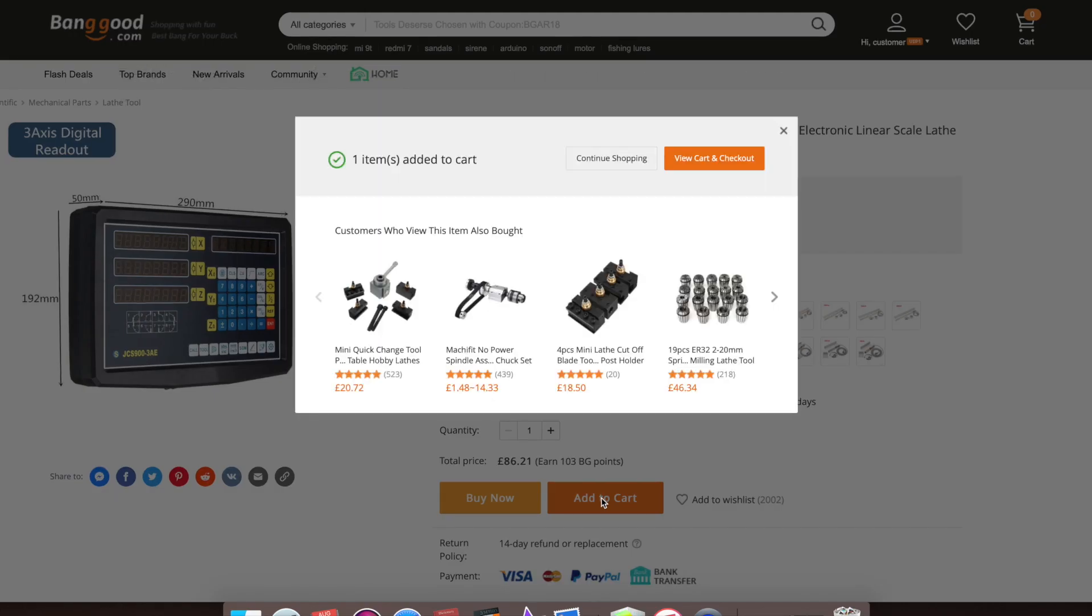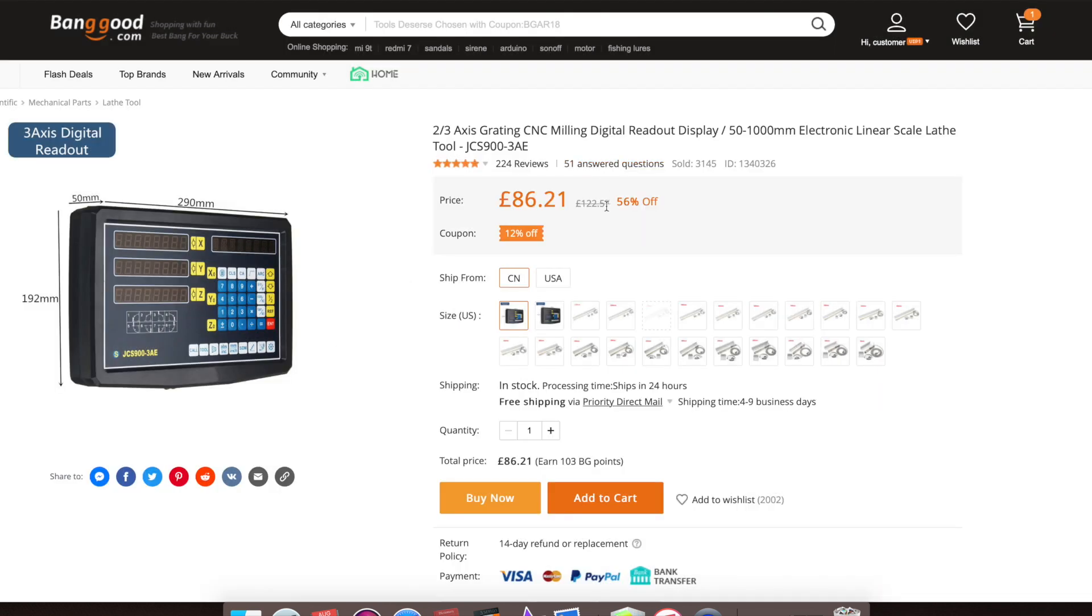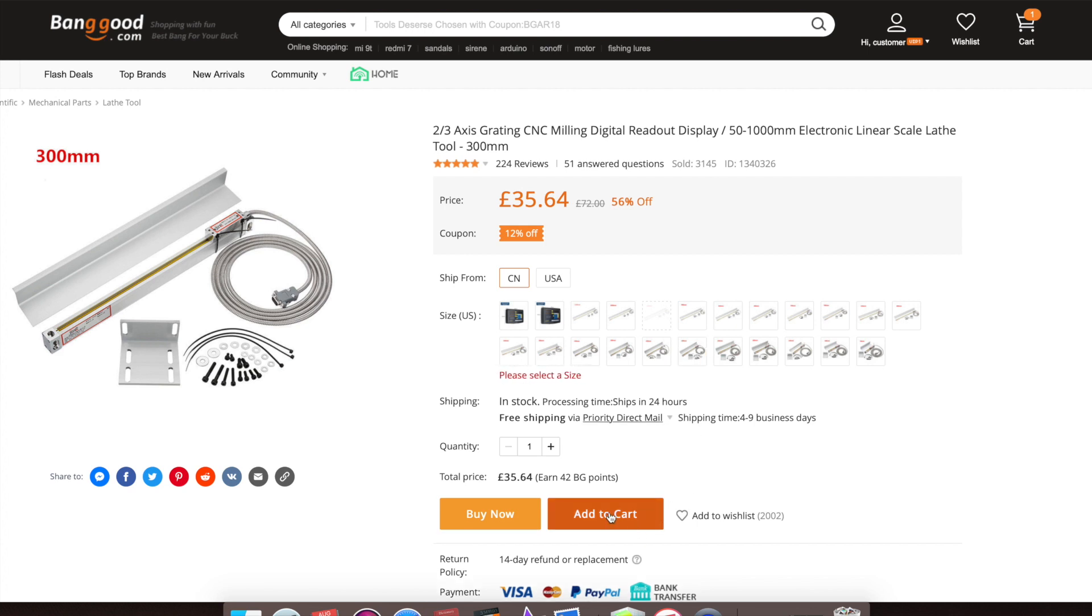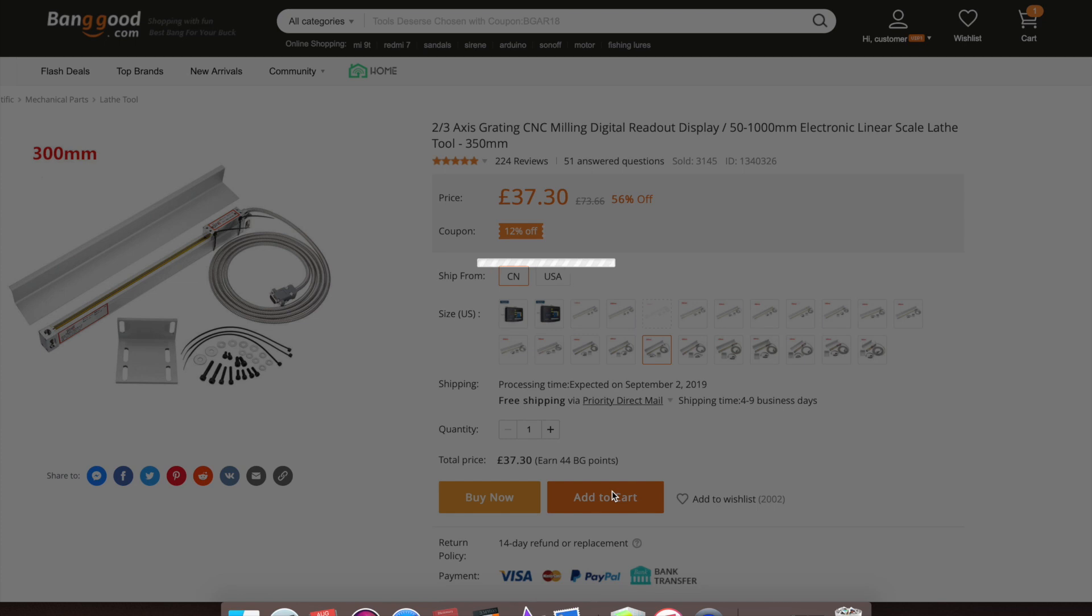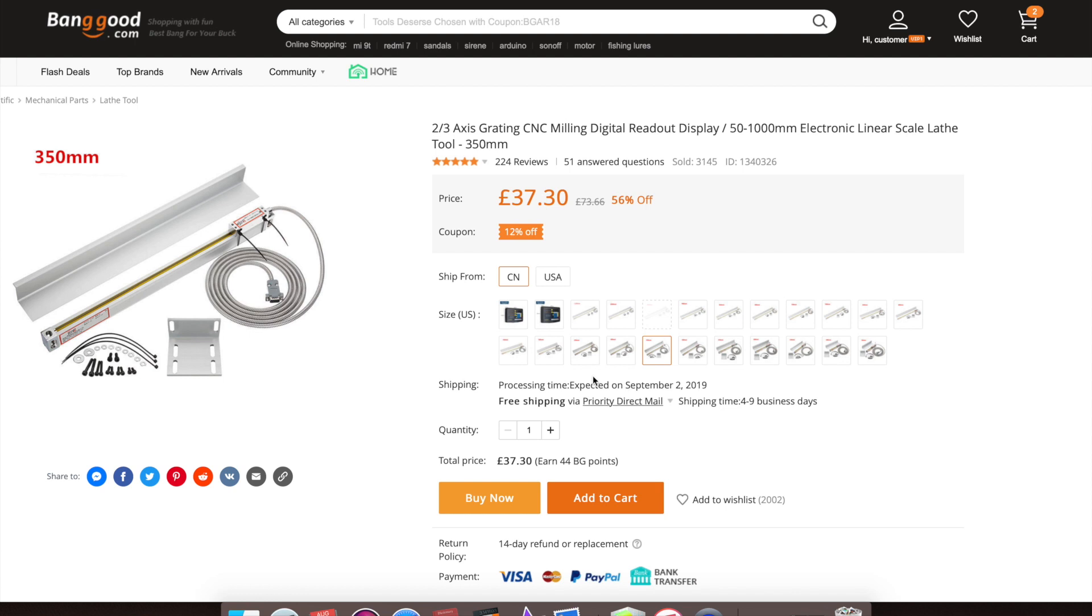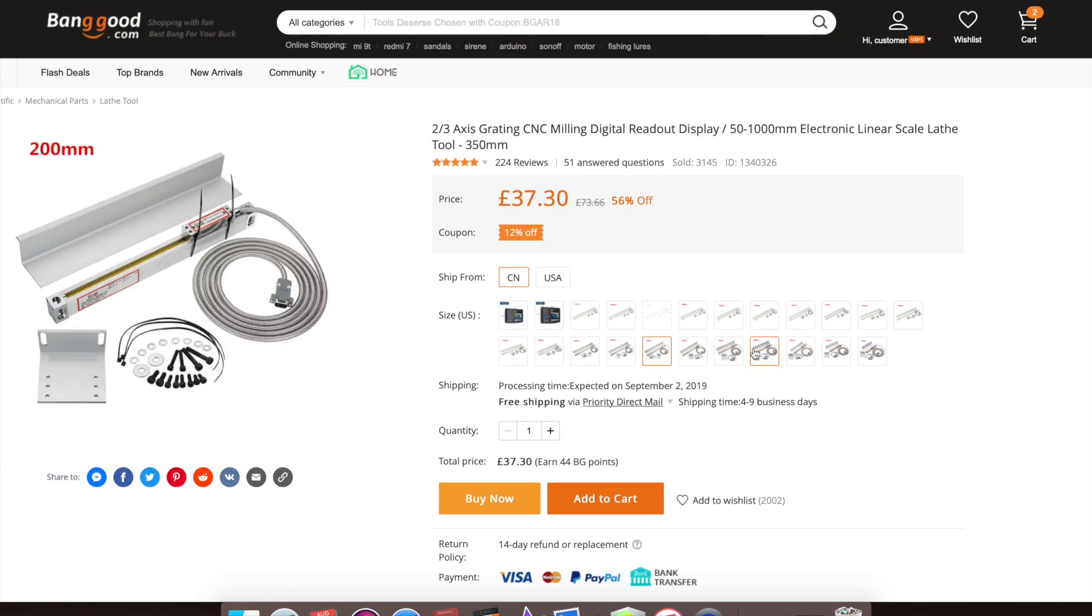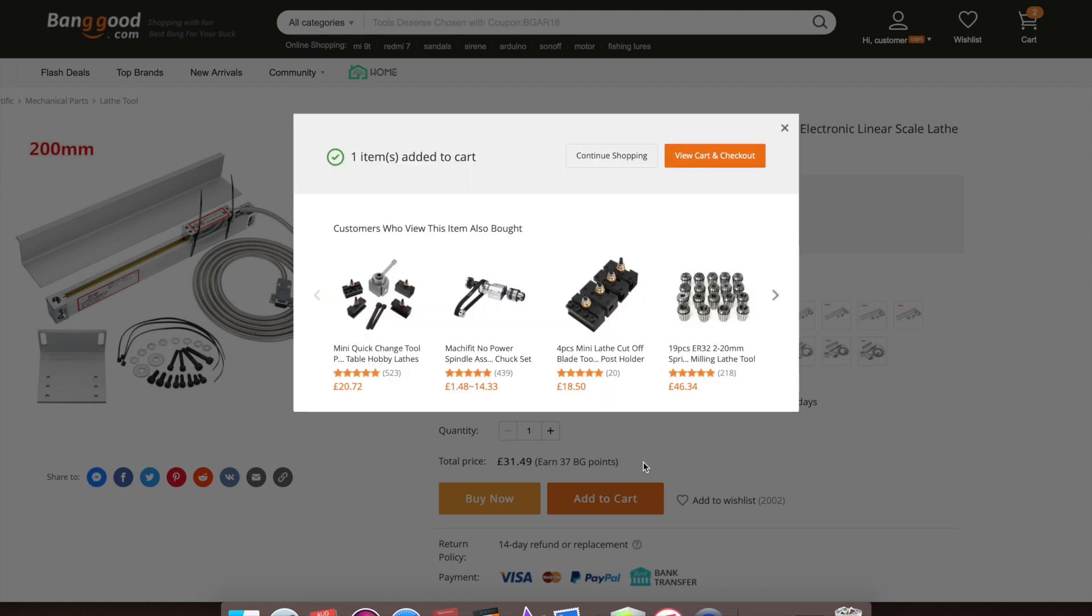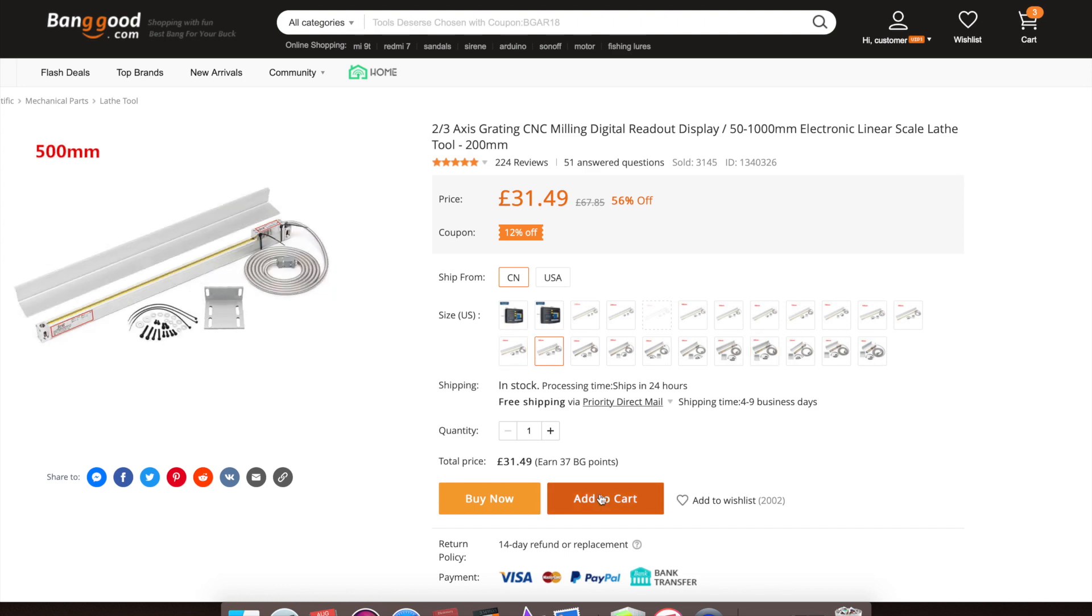Once you've got the control box you can continue shopping. Now we can shop for the scales. We need a 300 scale. So along here the numbers come up, 300, click on the 300. Make sure that the picture changes to the 300 scale. There we go, and then click add to cart. Don't worry if you've clicked it wrong, you can take it off the list in a moment. So we've got 300, we want a 200, add to cart, and we want a 500, add to cart.